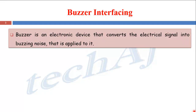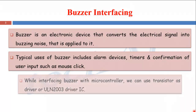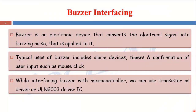A buzzer is an electronic device that converts an electrical signal into a buzzing noise. Typical uses of a buzzer include alarm devices, timers, and confirmation of user input such as a mouse click. While interfacing a buzzer with a microcontroller, we can use a transistor as a driver or a ULN2003 driver IC.